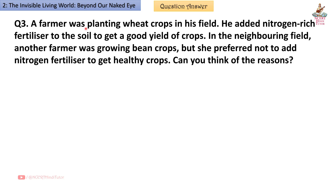Question 3: A farmer was planting wheat crops and added nitrogen-rich fertilizer to the soil to get a good yield. In the neighboring field, another farmer was growing bean crops but preferred not to add nitrogen fertilizer to get healthy crops. Can you think of the reasons?